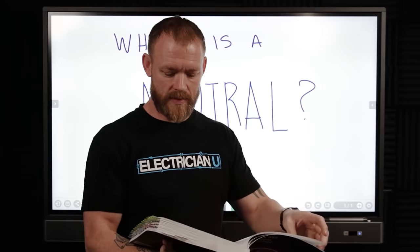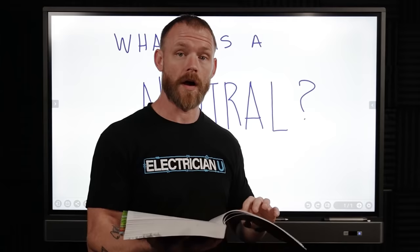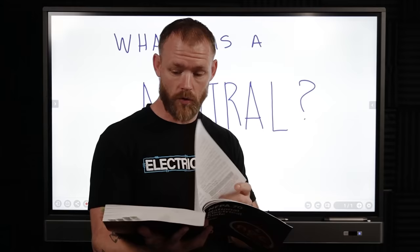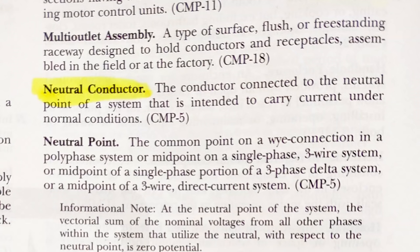The first thing I think is a good idea is to look at Article 100 of the National Electric Code. We're in the 2020 code book. What do they consider a neutral? More specifically, neutral conductor. It says the conductor connected to the neutral point of a system that is intended to carry current under normal conditions.